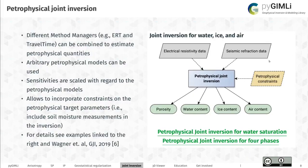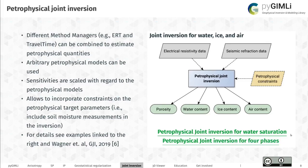Another way of joint inversion is petrophysically coupled joint inversion, making use of the fact that different geophysical methods are sensitive to water saturation and porosity, for example. There's a simple example on the website where ERT and travel time data are used with Archie's equation and the time averaging equation to estimate water saturation. There is also a more complex example in a cryosphere context where electrical resistivity and seismic refraction data are used to estimate a four-phase system of porosity, water content, ice content, and air content. Feel free to contact me regarding this recent publication.